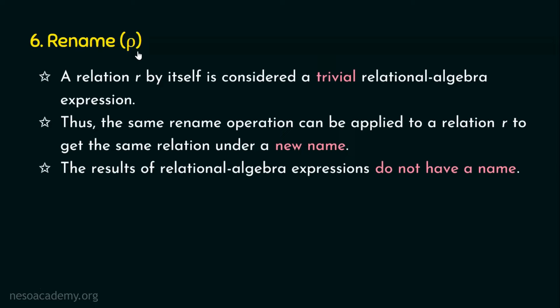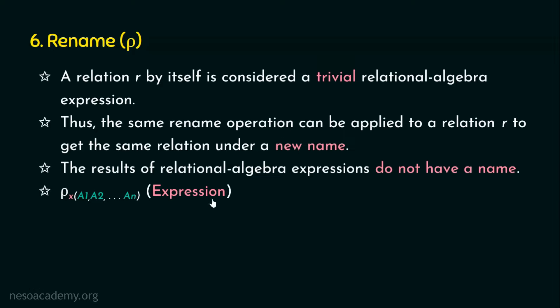What about the attributes? Can we rename the attribute names of a table? Of course — we can rename attribute names using an extended syntax. The same operator rho is used, where the expression may be a relational algebra expression or a table directly. While renaming, the new relation name is x, and a1, a2, up to an are the new names of the attributes. Assuming the relation has arity n — meaning n columns — we can rename all the columns or attributes with the new names a1, a2, up to an. So rename can be used to rename the table as well as the attributes.